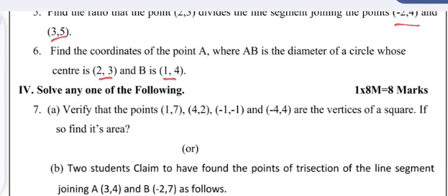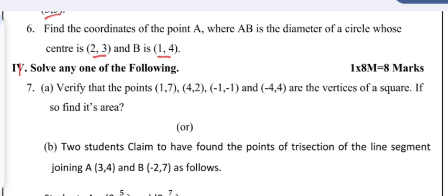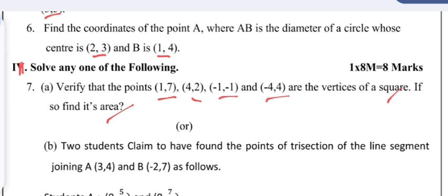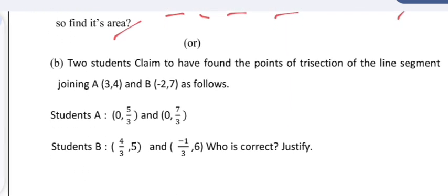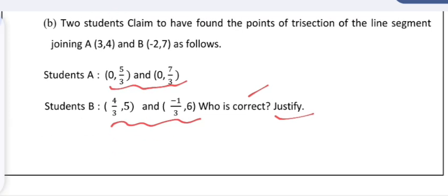Section 2 has 8 more questions with internal choice. Question 7a: Verify that the points (1, 7), (4, 2), (−1, −1), (−4, 4) are the vertices of a square and find its area. Or (7b): Two students claim to have found the points of trisection of the line segment joining A(3, 4) and B(−2, 7). Student A got two points and Student B got two different points — who is correct? Justify. The answers are given, so do not skip any part of this video.